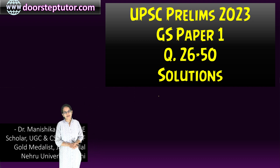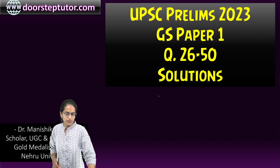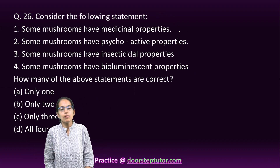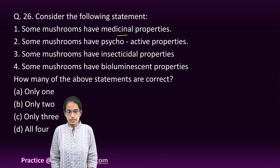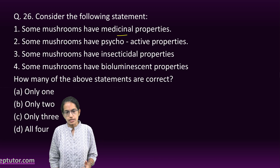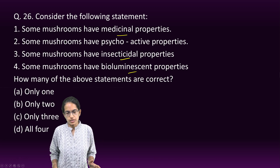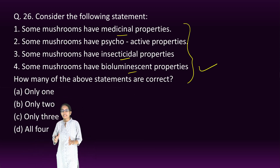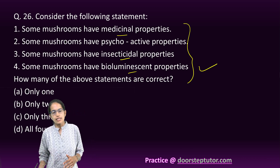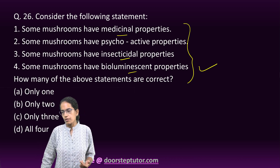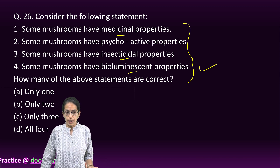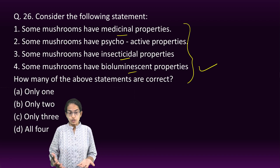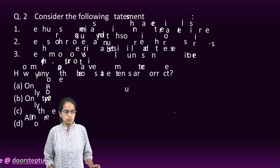Welcome! Let's solve the next 25 questions for GS Paper 1. The very first question talks about statements about mushrooms. Mushrooms have various properties ranging from medicinal, psychoactive, insecticidal, to bioluminescent. There are different species of mushrooms used for different purposes — some are toxic, some medicinal, some psychoactive. So all statements are correct here.